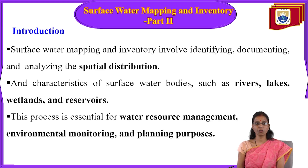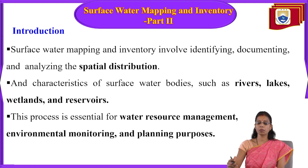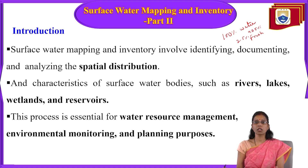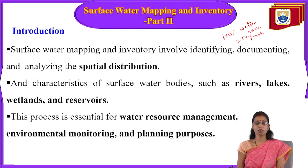If you remember from the previous lecture, we discussed that out of 100% of the water on Earth, only 2.5% is fresh water. The remaining 97.5% is water in saline condition. Out of that 2.5% fresh water, 50% is surface water — water present in rivers, lakes, ponds, or seas.